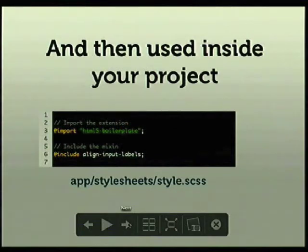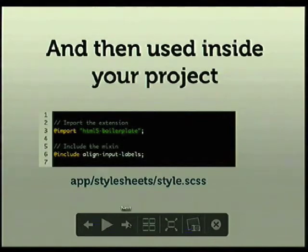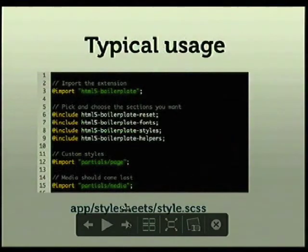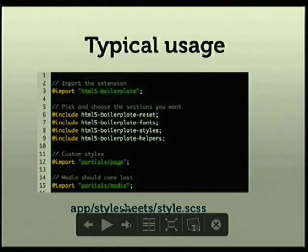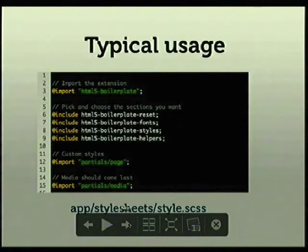So this would be like your app stylesheet — style.css. You import html5-boilerplate and then include whatever mix-ins you want to use, and it drops them into your stylesheet. Typical usage might look like: import html5-boilerplate, then go down the list — resets, font styles, helpers — then put your own stuff in, and then there's a partial for media with all your inline media styles. This all compiles to one stylesheet, so you're not making separate HTTP requests for each one.